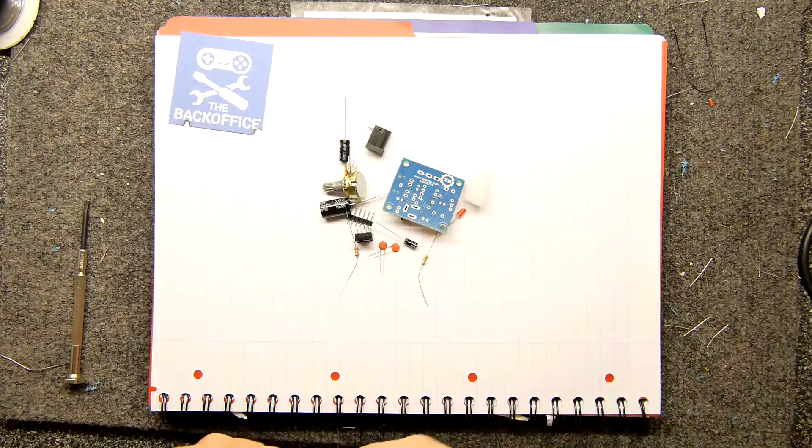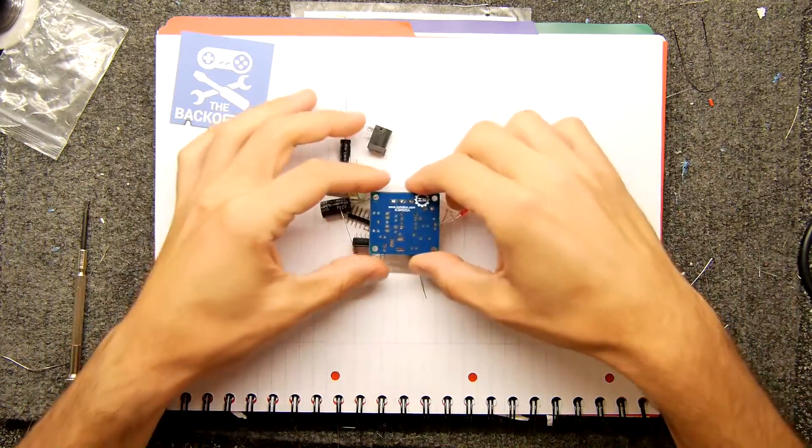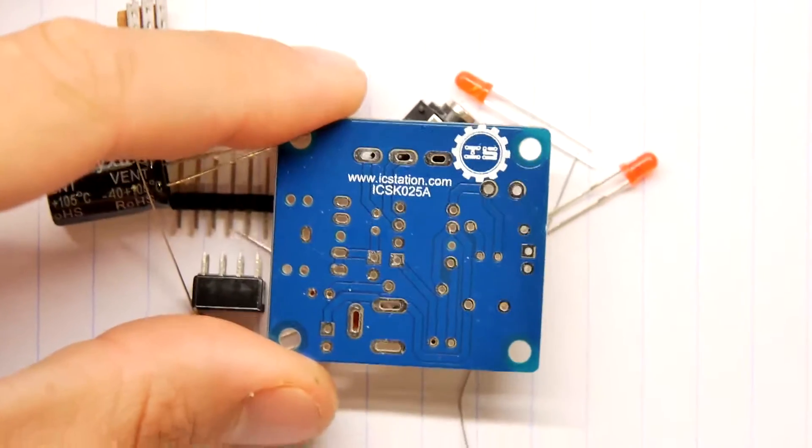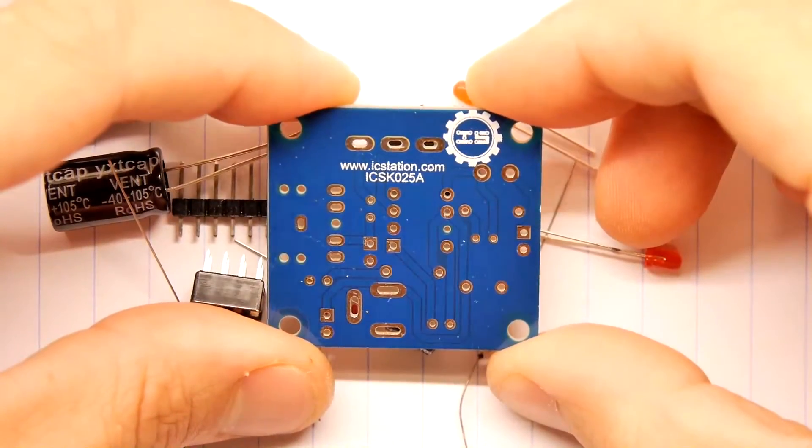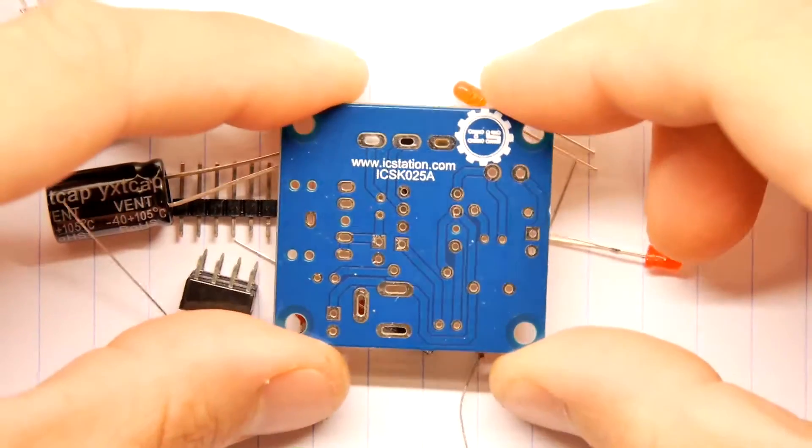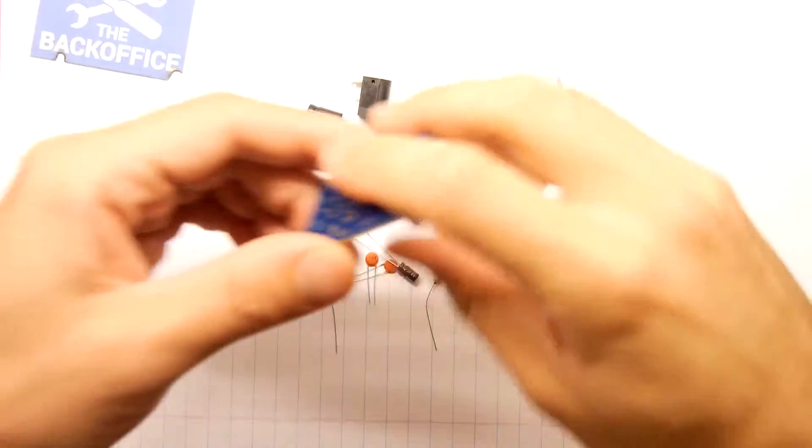Oh wow, look at that, it has a power jack so it's power related interestingly enough. Now I'm going to give you a heads up guys because if you go on the internet and you type in ICS-K025A you will know what this kit is before me because I'm going to look it up after I've assembled it.